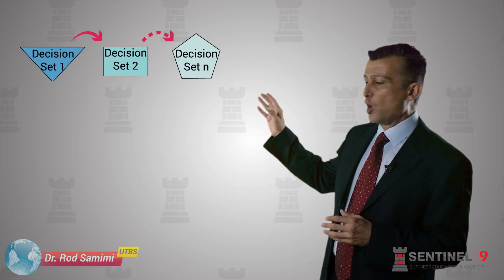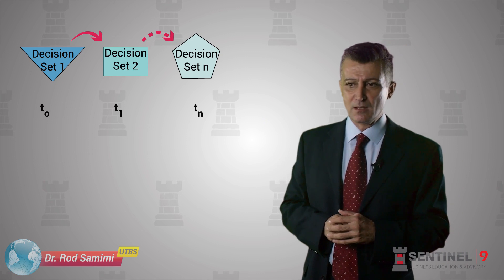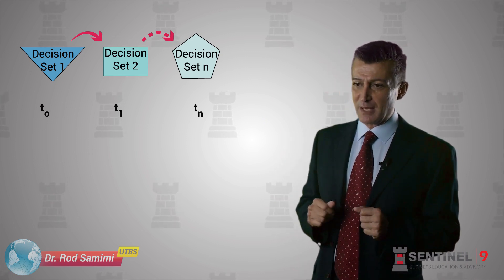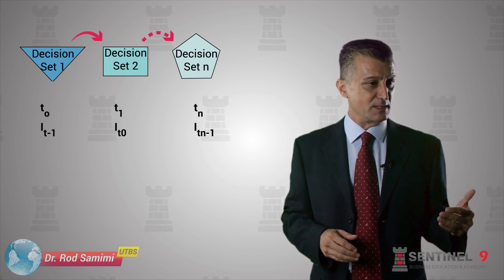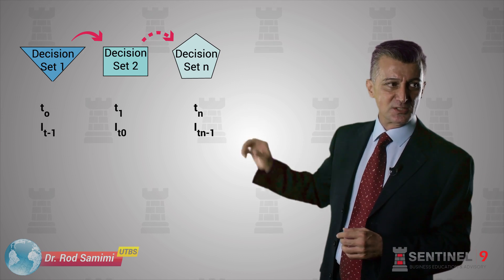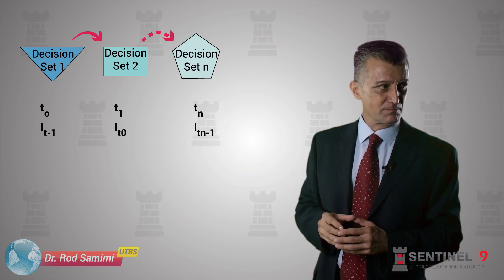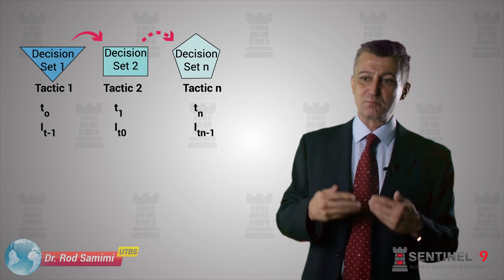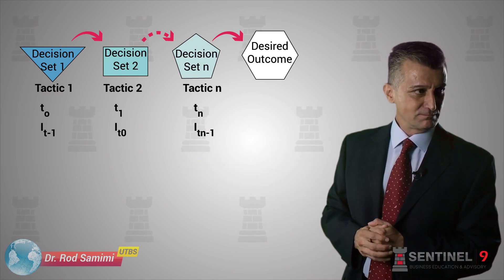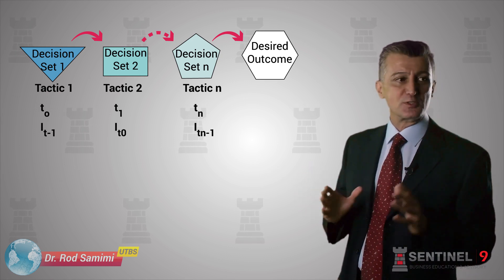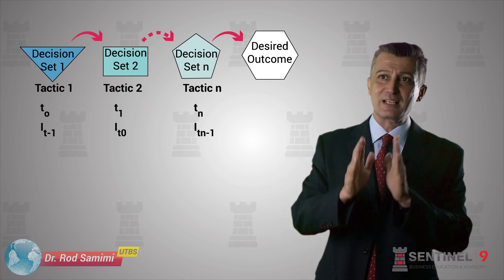Strategy is a series of correlated decisions at different points in time — correlated with respect to the best available information. Typically, this best available information is a lagged indicator, because we have the best available information from the previous period in the current period. Each one of these correlated decisions could be referred to as a tactical decision. A series of correlated decisions based on best available information, in order to attain a desired outcome in a future period — attaining a desired outcome essentially means reducing the dispersion of other possibilities around that desired outcome.